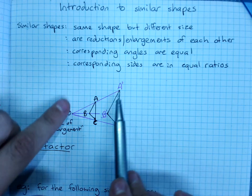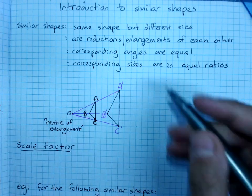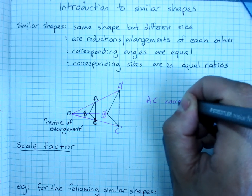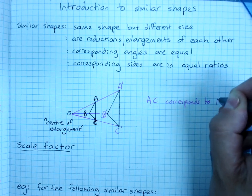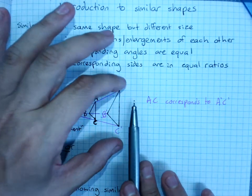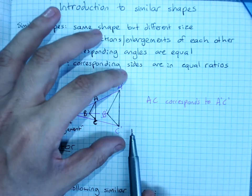Corresponding sides, so side AC corresponds to side A prime C prime. It's the longest side in the shape. They match.